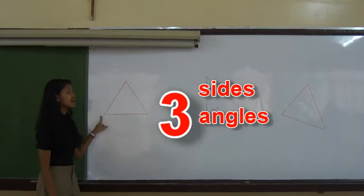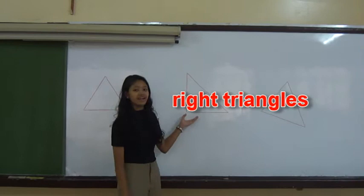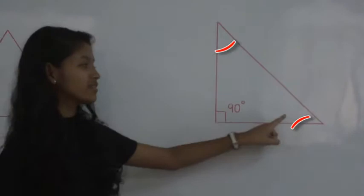A right triangle has an angle that measures 90 degrees and two angles are complementary. To solve for the missing parts of the triangle, one must remember the six trigonometric functions.